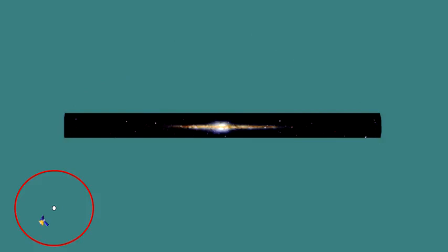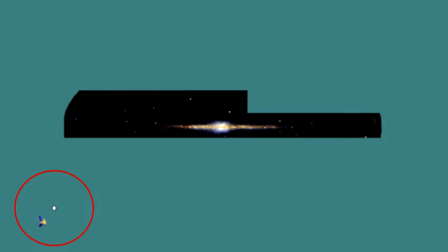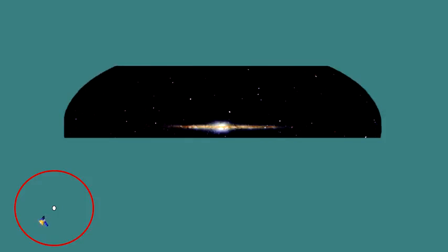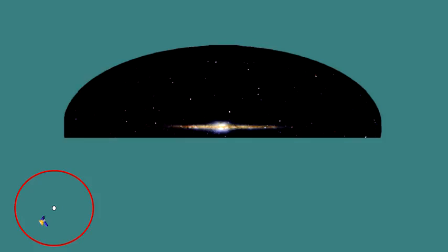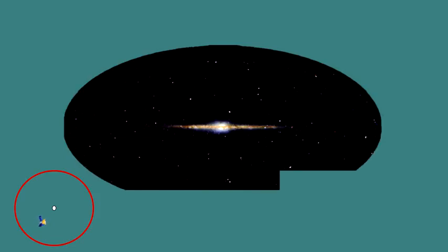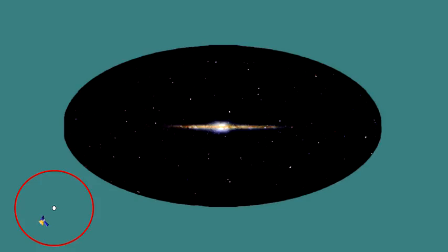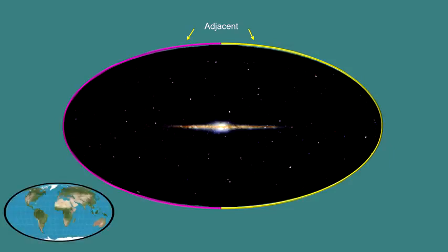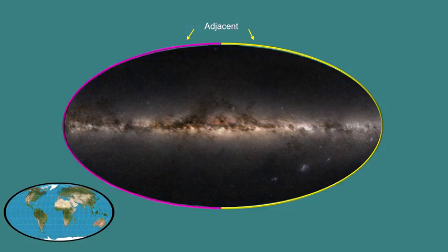Now we rotate the camera up a bit and repeat the process, doing this over and over until the entire northern sky is covered. The last shot is taken with the camera pointing straight up, perpendicular to the galactic plane. We then repeat the process for the southern sky and we have the entire picture. Once we have all the pictures covering the spherical surface of the sky all around us, we map it to a flat surface. Astronomers use the elliptical projection method because it maintains the relative size and distance between celestial objects.